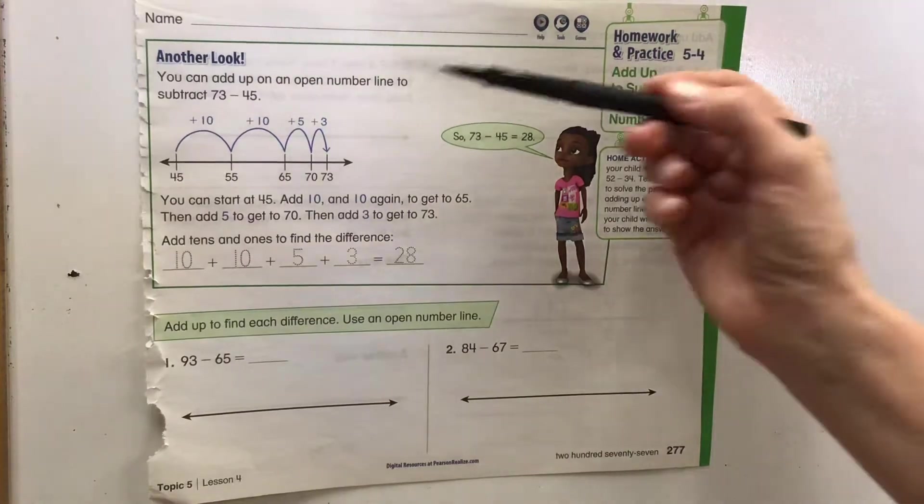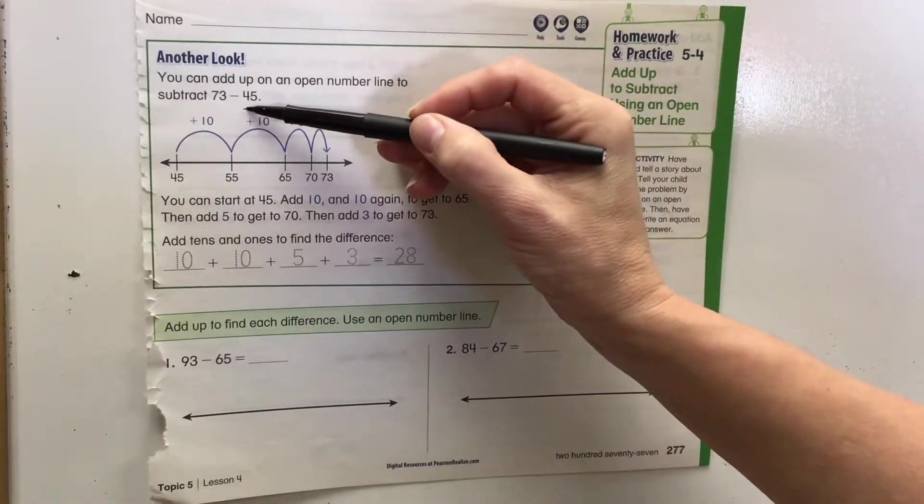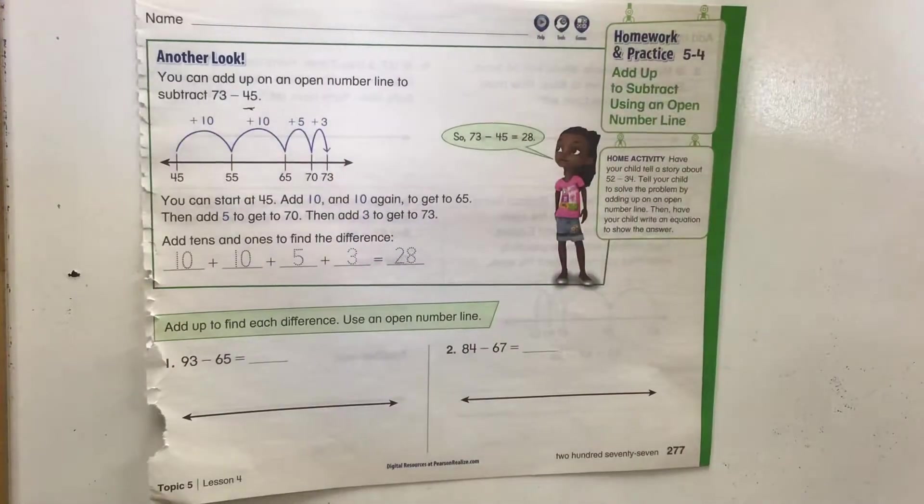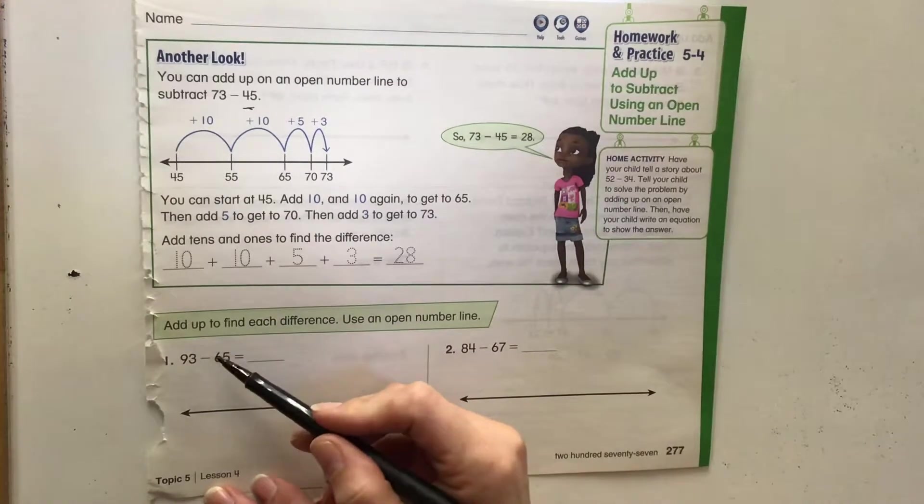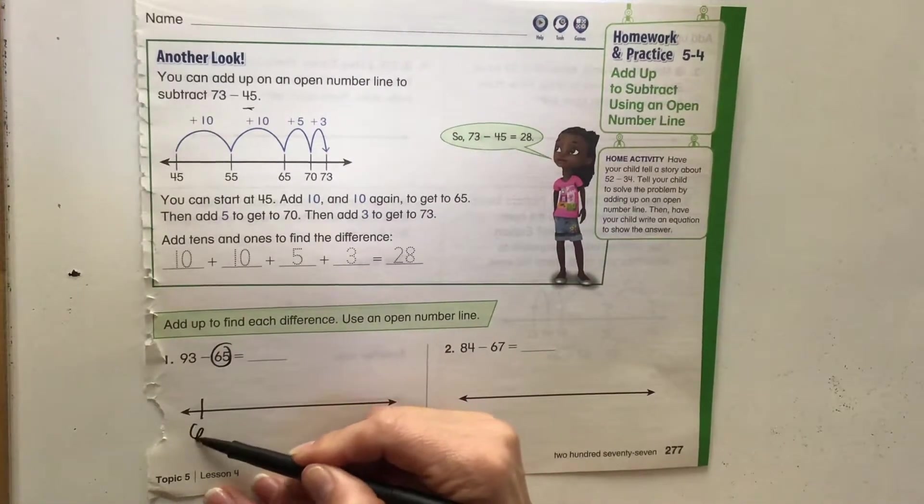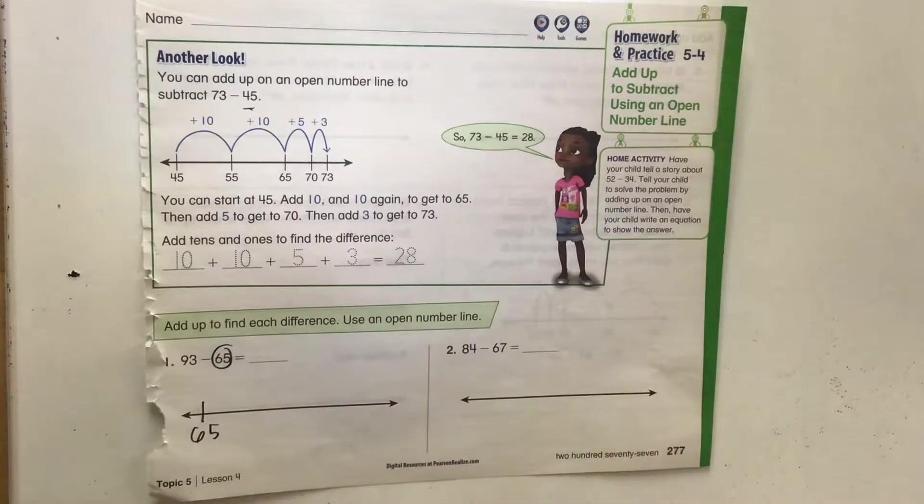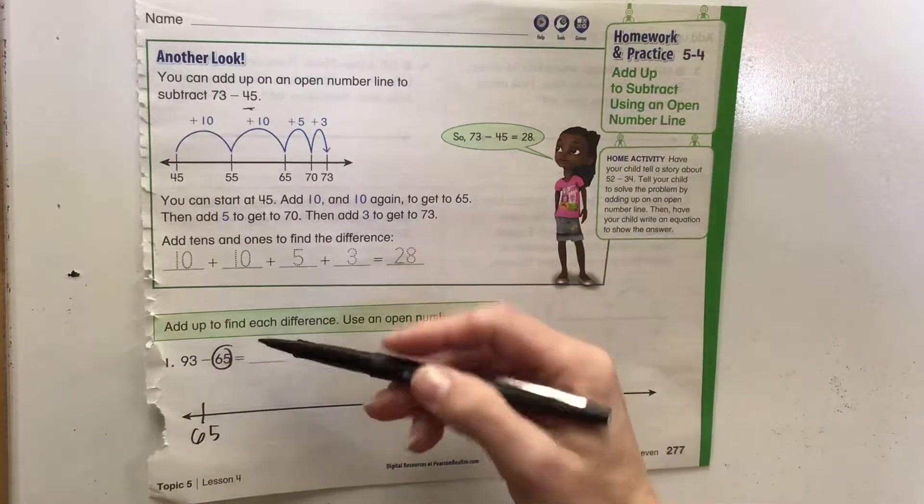So instead of starting with the highest number like 73 minus 45, we can actually start with the 45 and count up. We can do it in groups of 10s and 5s. So if we start here, we're going to start with the lower number 65 and we are going to count up to 93.